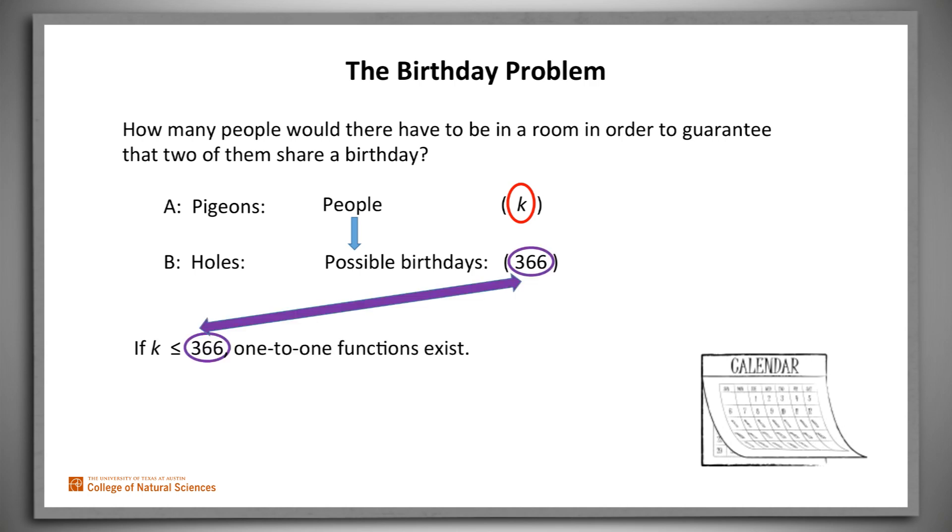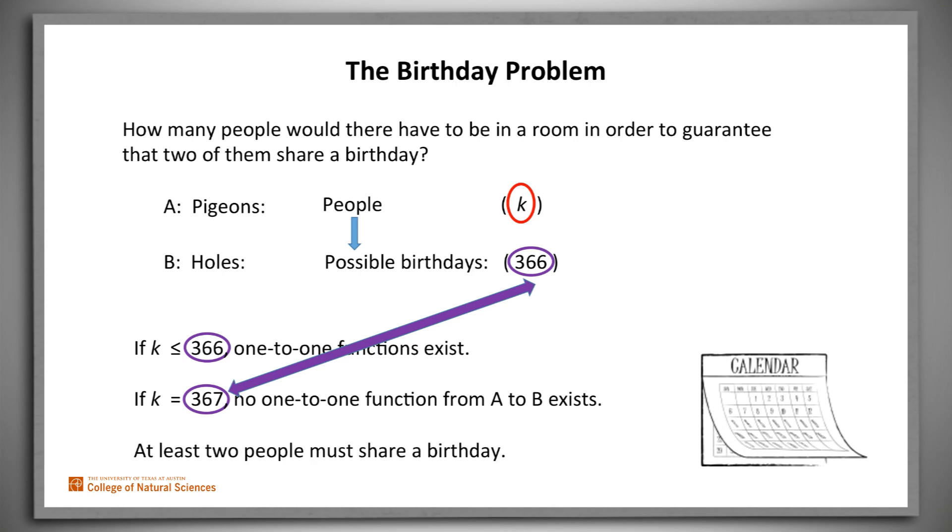Well, if K is less than or equal to 366, then there exist one-to-one functions from A to B. But if K is 367, then there are more elements in A than there are in B. And so, no one-to-one function from A to B exists, and at least two people have to share a birthday.